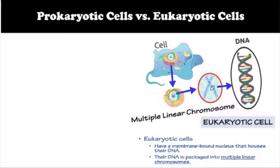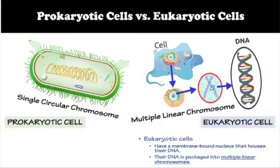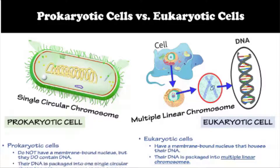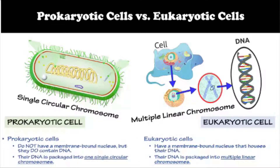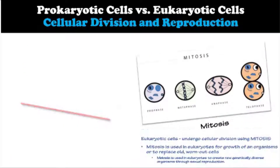Eukaryotic cell DNA is packaged into multiple linear chromosomes. Prokaryotic cells do not have a membrane-bound nucleus, but they do contain DNA. Their DNA is packaged into one single circular chromosome.